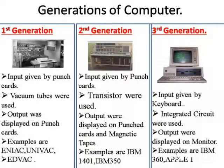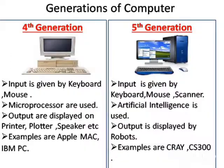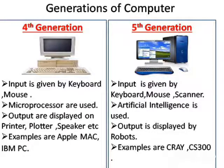In the third generation, input was given by the keyboard, integrated circuits were used, and output was displayed on monitors. In the fourth generation, input is given by keyboard and mouse, microprocessors are used, and output is displayed on printers, plotters, speakers, etc. In the fifth generation, input is given by keyboard, mouse, and scanner, artificial intelligence is used, and output is displayed by robots.